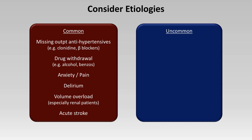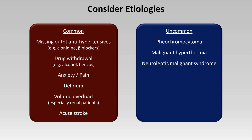There are also uncommon causes of acute hypertension in hospitalized patients. While some residents may never encounter these during residency, if you never consider the diagnosis, you'll never make it. These include pheochromocytoma acute exacerbations triggered by surgery or anesthesia, malignant hyperthermia — a rare hypermetabolic crisis triggered by volatile anesthetics in susceptible individuals — neuroleptic malignant syndrome, serotonin syndrome, autonomic dysreflexia seen almost solely in patients with high spinal cord injuries, and elevated intracranial pressure.